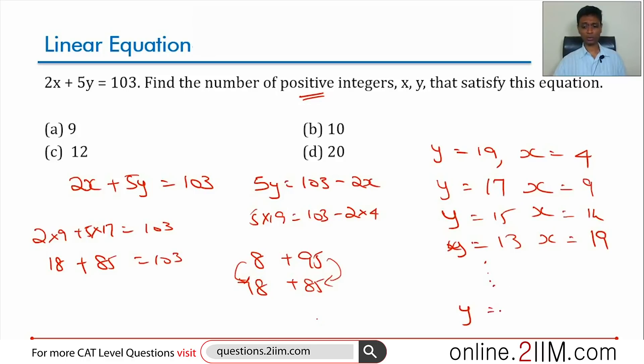What is the smallest value y can take? Y can be 1. When y is 1, find x. 5y is 5, x is 49. I don't need, I need to count how many pairs are there, so let's not even worry about x. Y goes from 1 to 19, all odd numbers from 1 to 19.